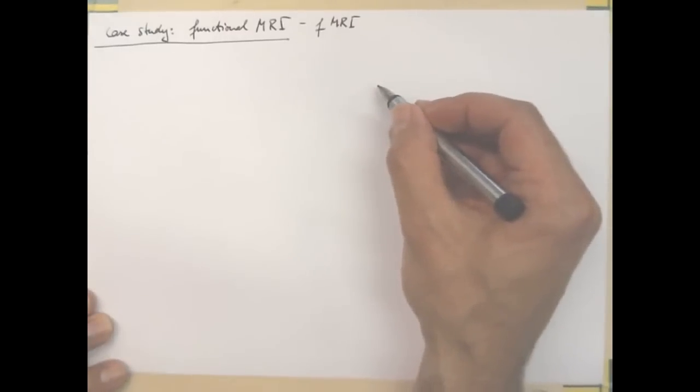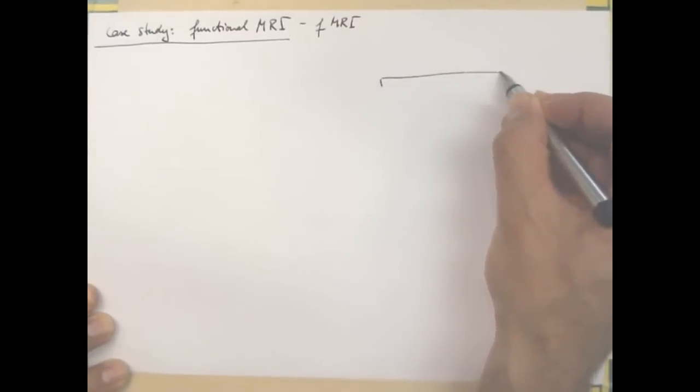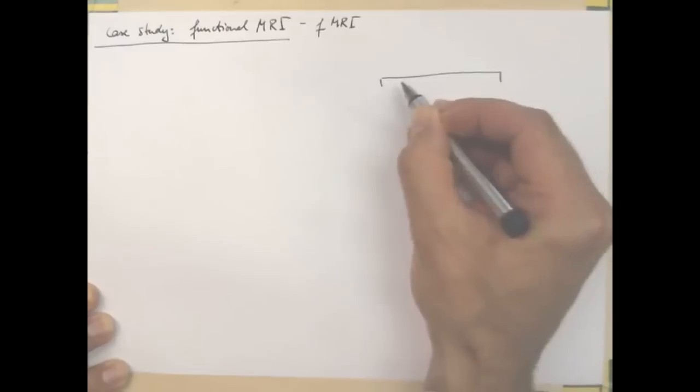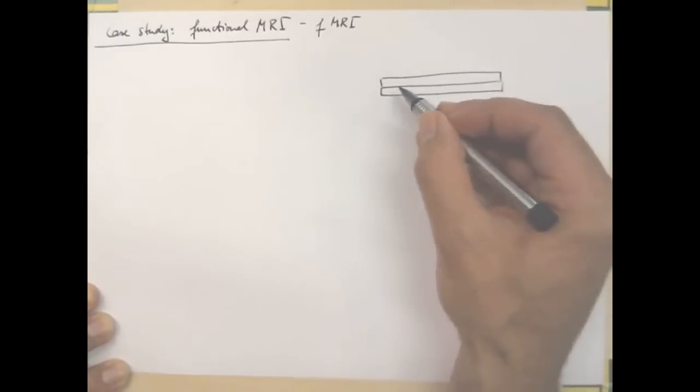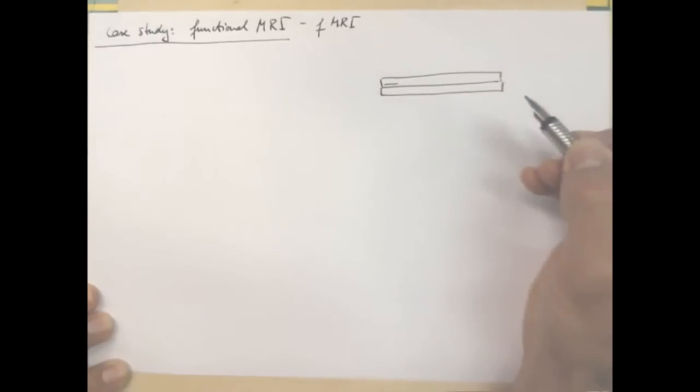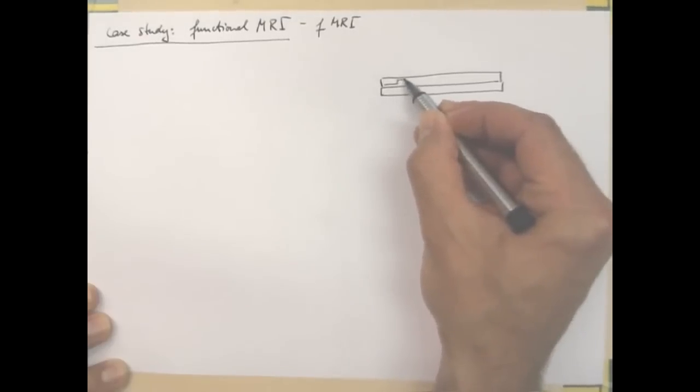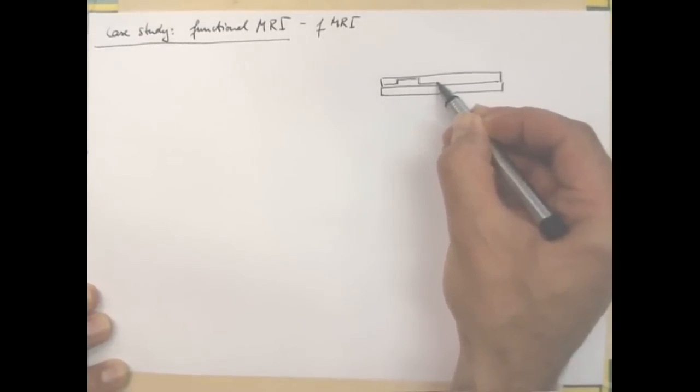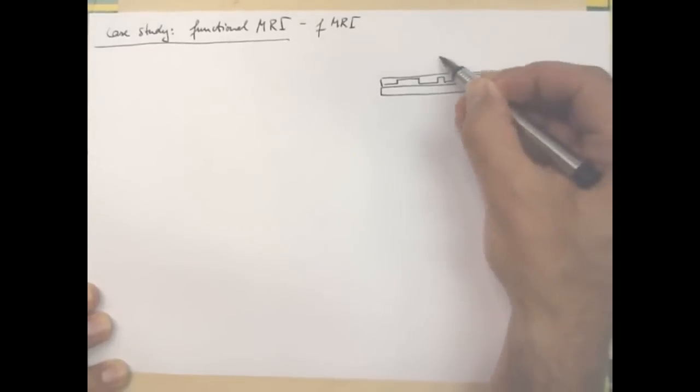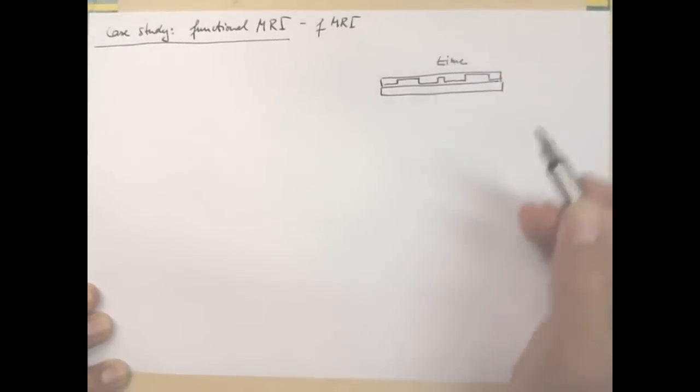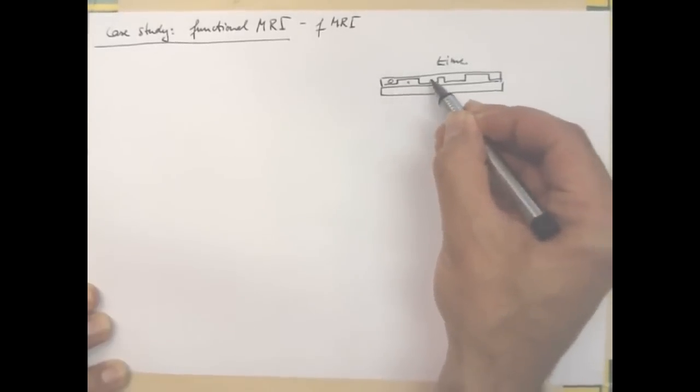For example, you can do the following: you can have as explanatory variables your experimental paradigm. So let's say I do not show a picture of your mother-in-law, I show a picture of your mother-in-law, I do not show a picture of your mother-in-law, and I repeat that over time. So this is time, and these would be zeros or ones.